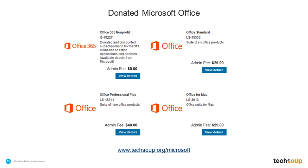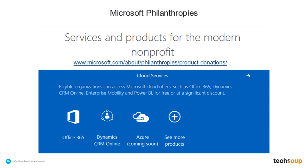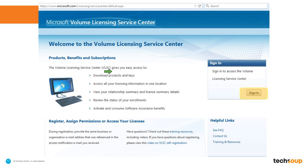There is also a Home Use Program that allows you to pay — I think it's around $10 — to extend the license you have on your office computer to use on a home machine. This is all provided through Microsoft Philanthropies and delivered through Microsoft's Volume Licensing Service Center. When you request donated Microsoft products through TechSoup, you get an email saying your donations are ready with links to download your software and license keys.